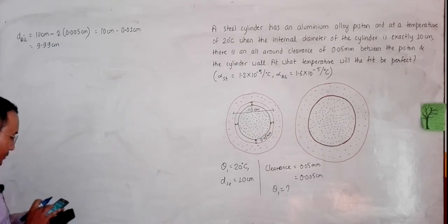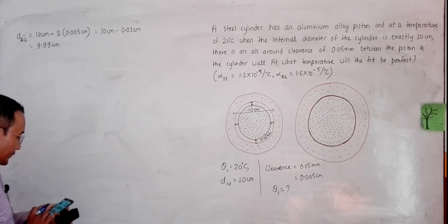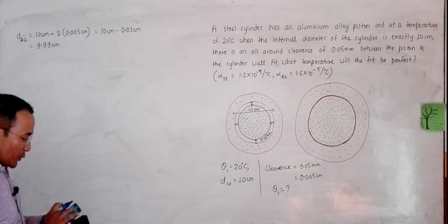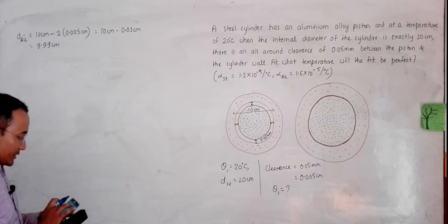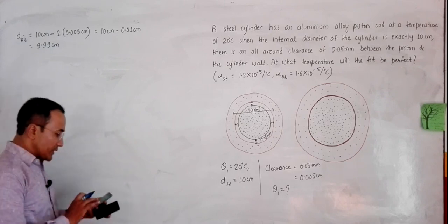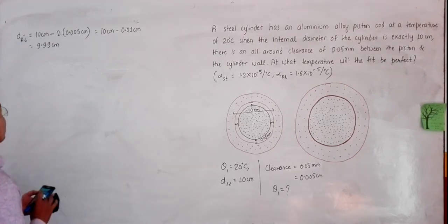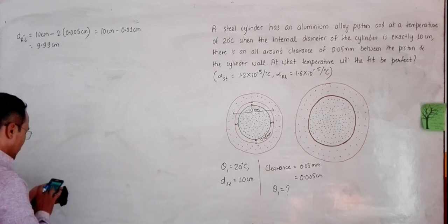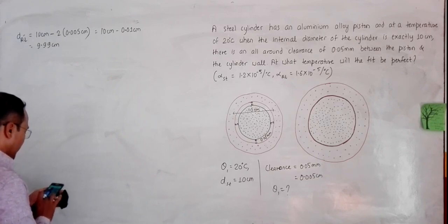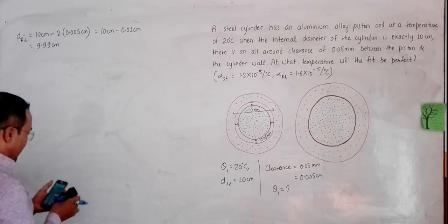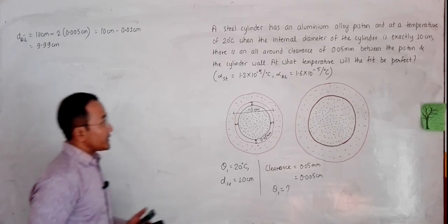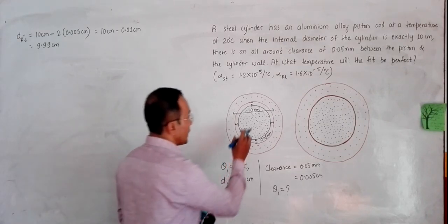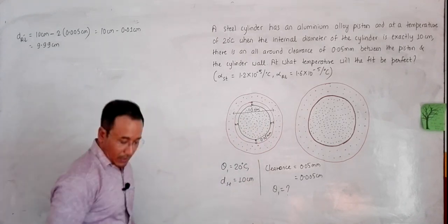Using the calculator: 2 × 0.005 = 0.01, and 10 − 0.01 = 9.99 cm. So the diameter of the aluminum piston is 9.99 cm.